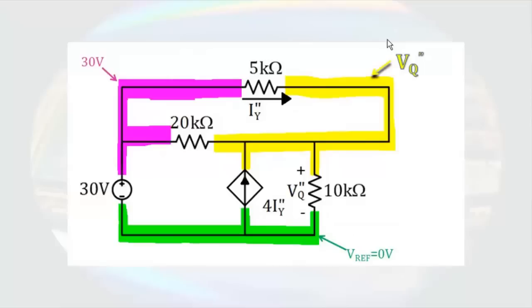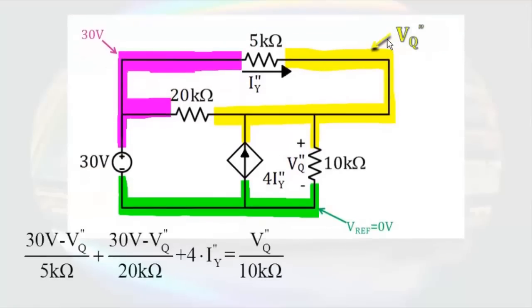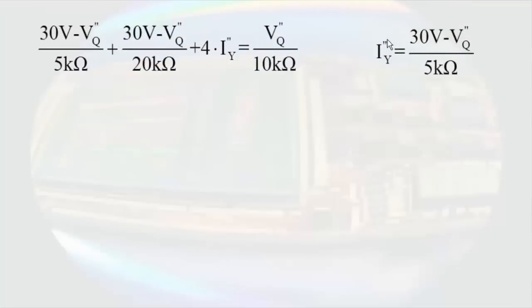Then the yellow node would be VQ double prime. We could then do an informal node voltage analysis. At the yellow node, we would have the current through the 5 kilo ohm resistor plus the current through the 20 kilo ohm resistor plus 4 times IY double prime equal to the current through the 10 kilo ohm resistor. We also have that the controlling parameter IY double prime is equal to 30 volts minus VQ double prime over 5 kilo ohms. Taking these two equations and performing a little bit of algebra results in 23 times VQ double prime equals 630 volts or VQ double prime equals 27.39 volts.